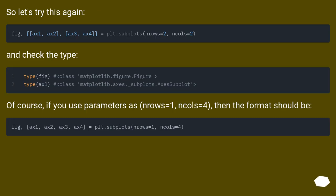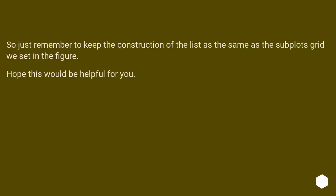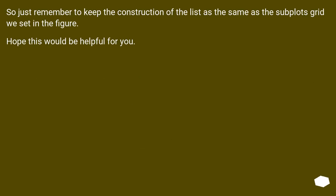So let's try this again and check the type. Of course, if you use parameters as nrows=1, ncols=4, then the format should be adjusted. So just remember to keep the construction of the list the same as the subplots grid we set in the figure. Hope this would be helpful for you.